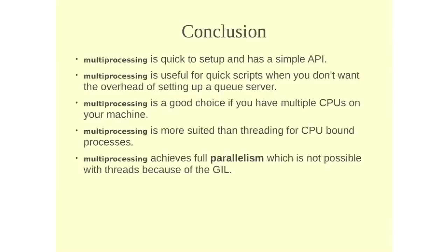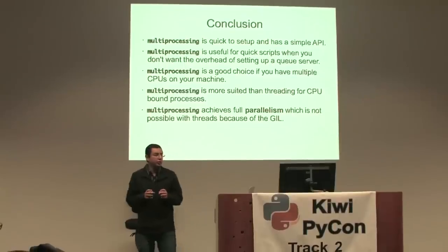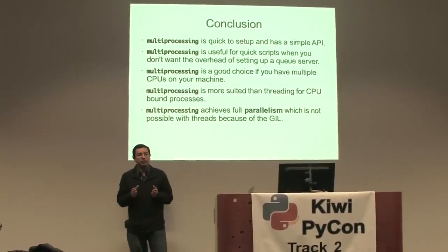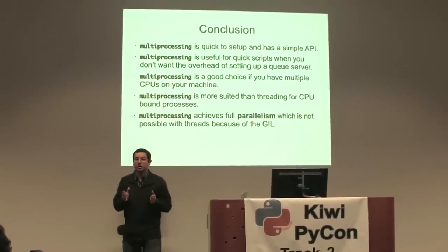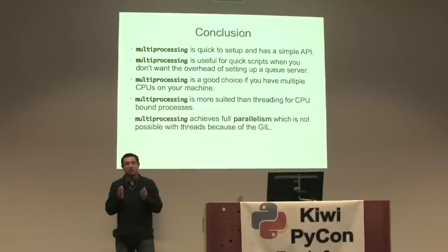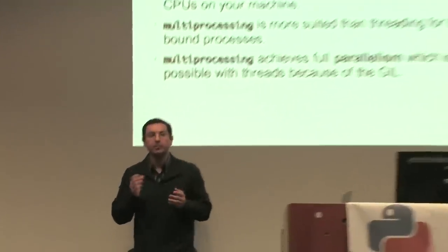So that's why I like to use multiprocessing in some situations. As I said, if you have CPU bound process, multiprocessing is a good choice. And it also achieves full parallelism. So even though you might think that threading gives you some sort of parallelism, it doesn't really because the threads run one at a time. They don't run together at the same time because of the GIL.